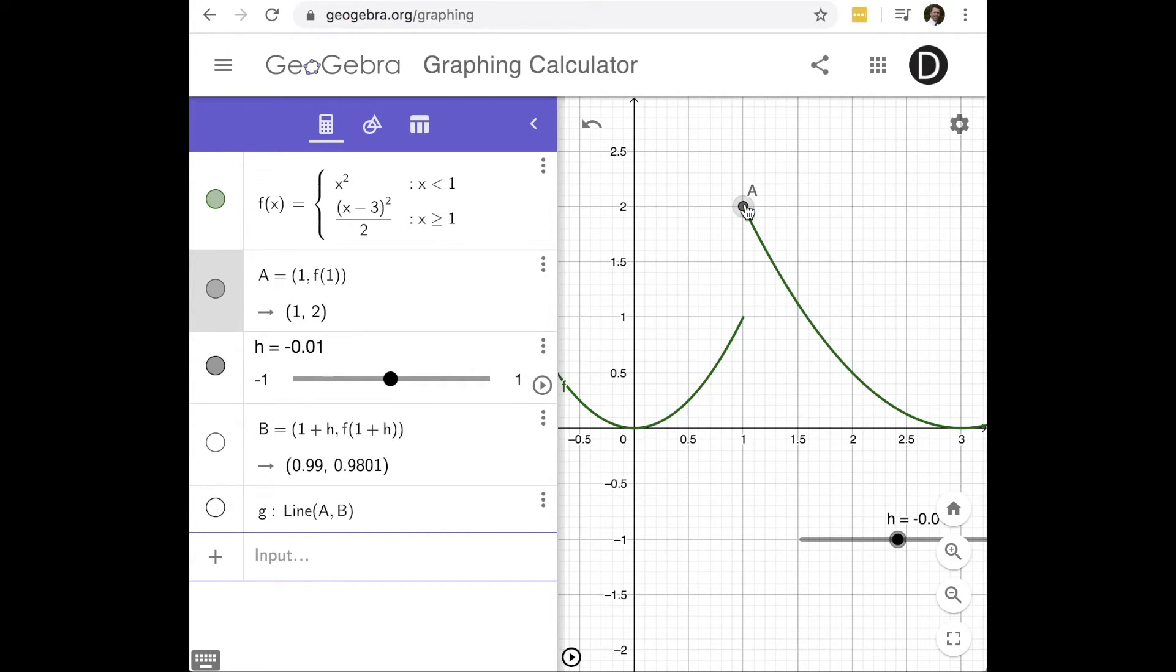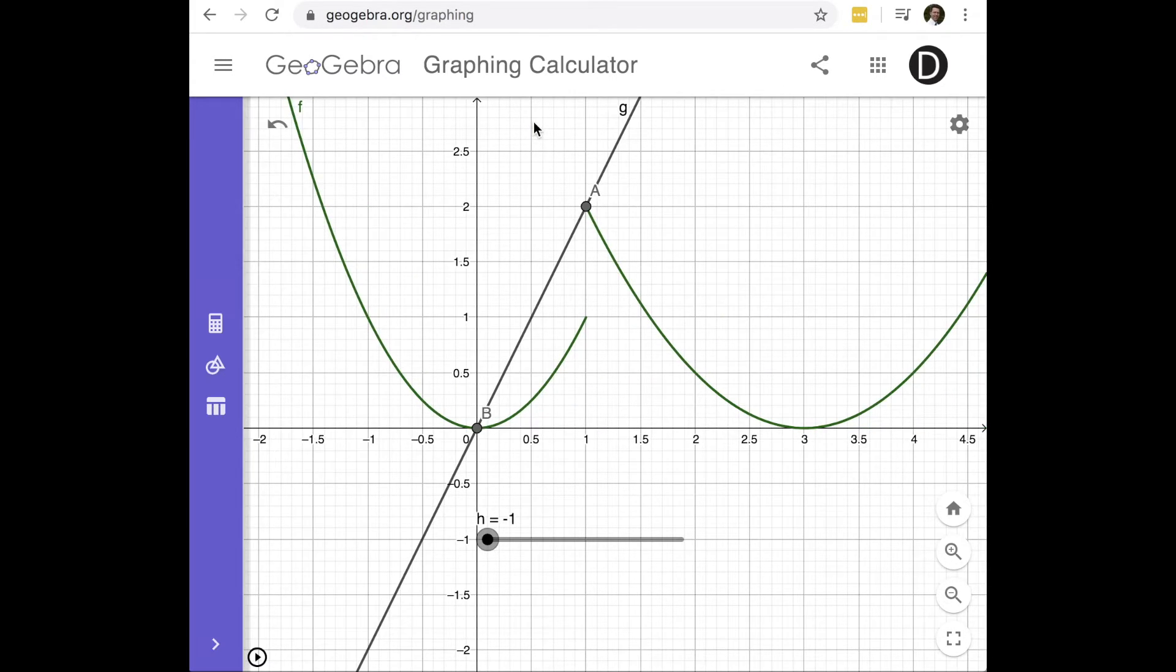So let's take a look and see what happens. I'm going to turn on my second point and I'm going to turn on my line. So as I come in from the left this time notice what's happening to my secant line because there's this jump in the graph. The closer and closer I get to h equals 0, my secant line has a positive slope that's getting vertical and so the limit on the left is positive infinity.